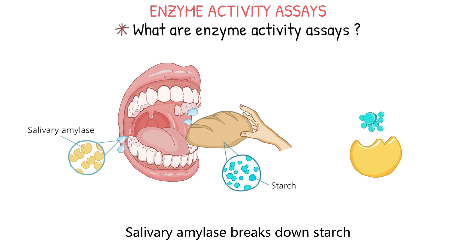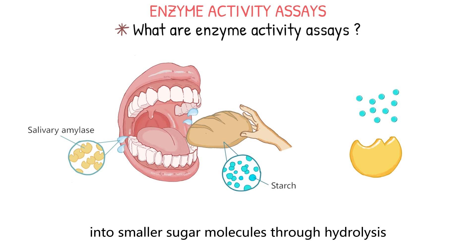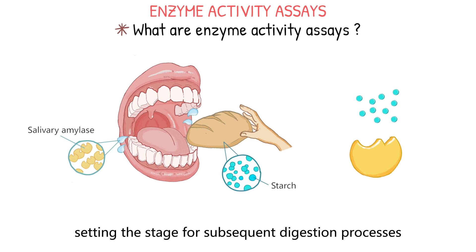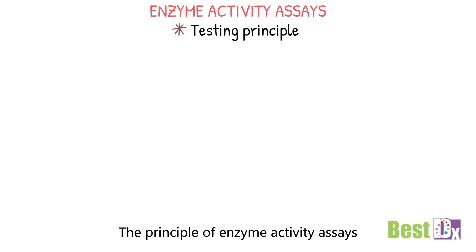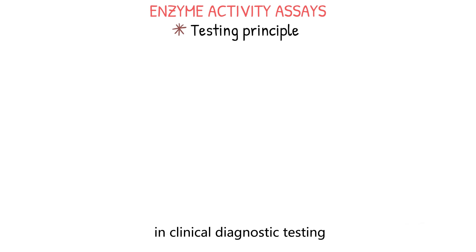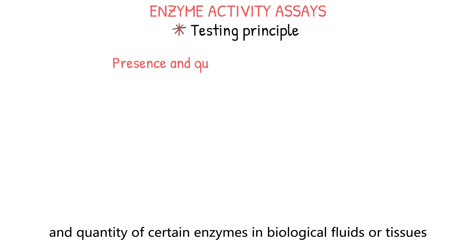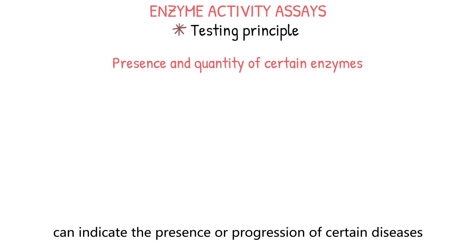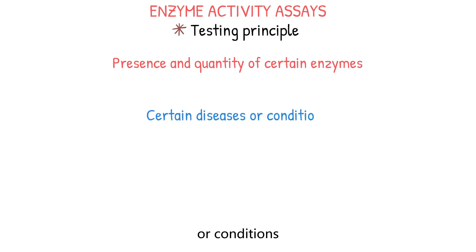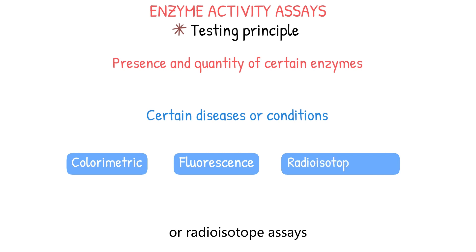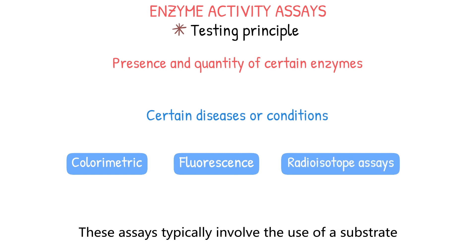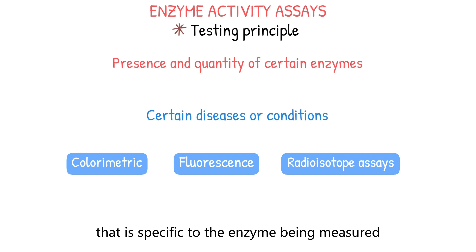Salivary amylase breaks down starch into smaller sugar molecules through hydrolysis, setting the stage for subsequent digestion processes and nutrient absorption. The principle of enzyme activity assays in clinical diagnostic testing is based on the fact that the presence and quantity of certain enzymes in biological fluids or tissues can indicate the presence or progression of certain diseases or conditions. Enzyme activity assays are performed using a variety of methods such as colorimetric, fluorescence, or radioisotope assays. These assays typically involve the use of a substrate that is specific to the enzyme measured.